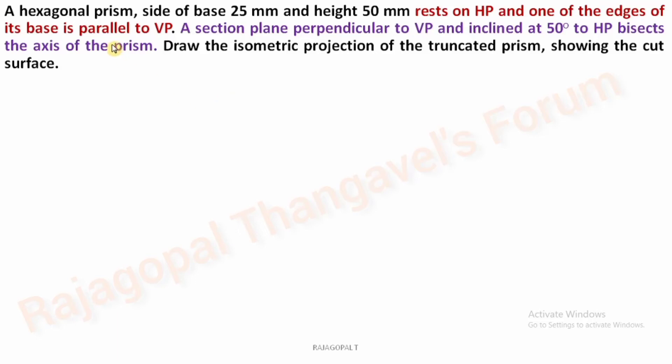Hello students, welcome back. In this video we will discuss the isometric projection of the truncated hexagonal prism. In the previous videos we had discussed the isometric projection of the frustum pyramid, then isometric projection of the truncated pyramid, followed by isometric projection of the truncated cylinder. If you wish to check those videos, check the description box for the link after watching this video.